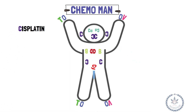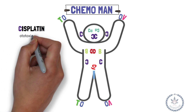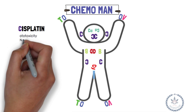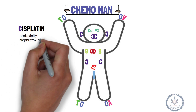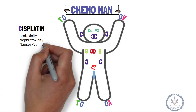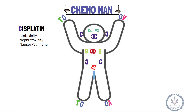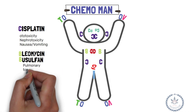C stands for cisplatin. The toxicity of cisplatin leads to ototoxicity — that is toxicity of the ears — nephrotoxicity in the kidneys, and nausea or vomiting. B stands for bleomycin and busulfan. B is around the lung area, and both bleomycin and busulfan cause pulmonary toxicity.